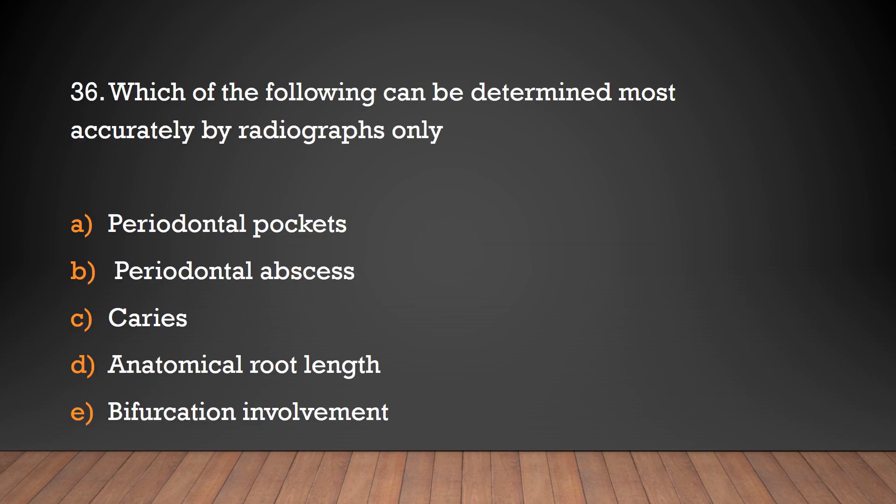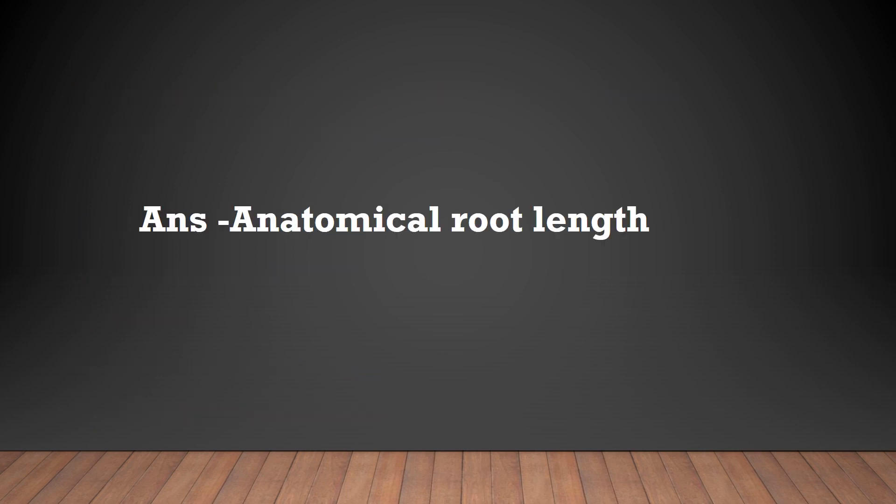Which of the following can be determined most accurately by radiographs only? Periodontal pockets, periodontal abscess, caries, anatomical root length, or bifurcation involvement. The answer is anatomical root length.